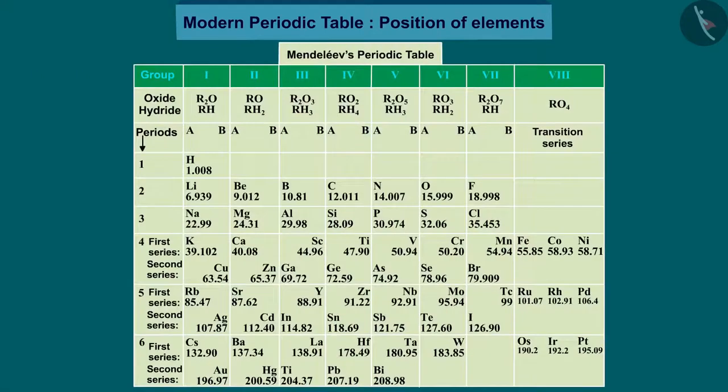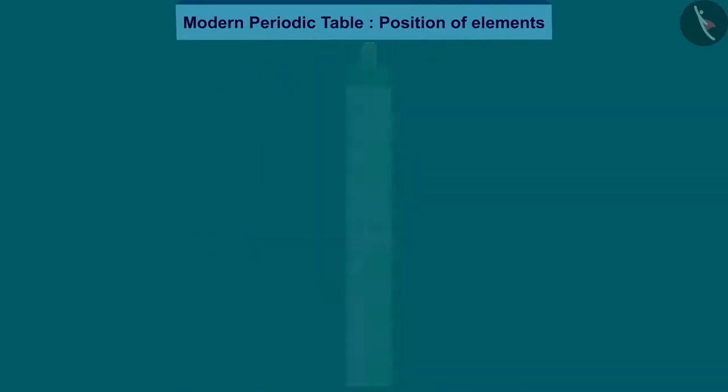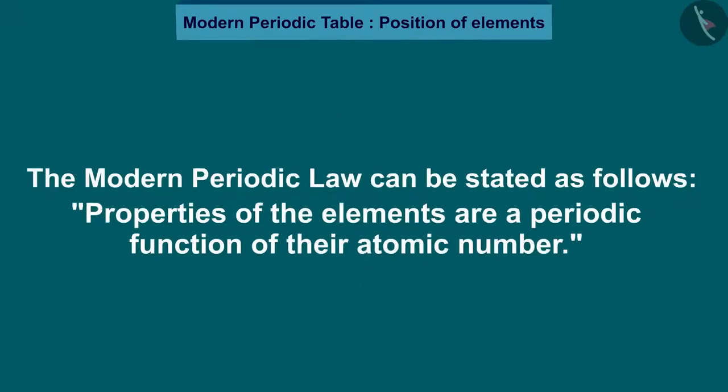Accordingly, Mendeleev's periodic law was modified and atomic number was adopted as the basis of modern periodic table and the modern periodic law can be stated as follows: Properties of the elements are a periodic function of their atomic number.